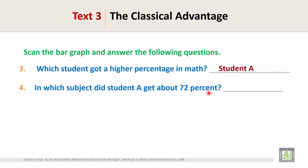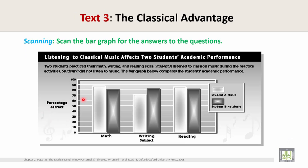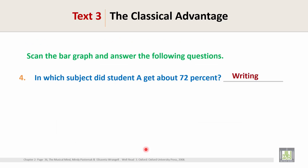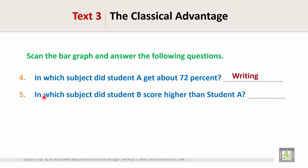Question 4: In which subject did Student A get about 72 percent? Look at the graph — here is 70. This student has above 70, around 72. This white color means Student A got about 72 percent in the writing subject. So the answer is writing.